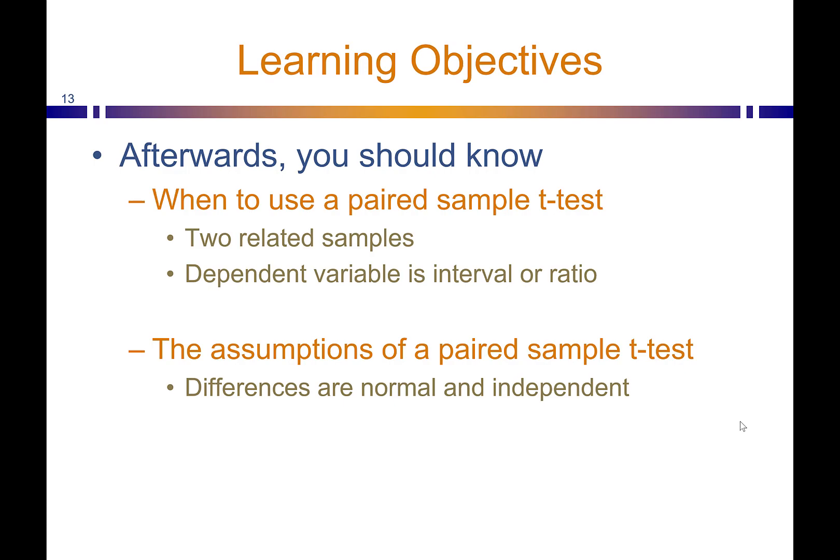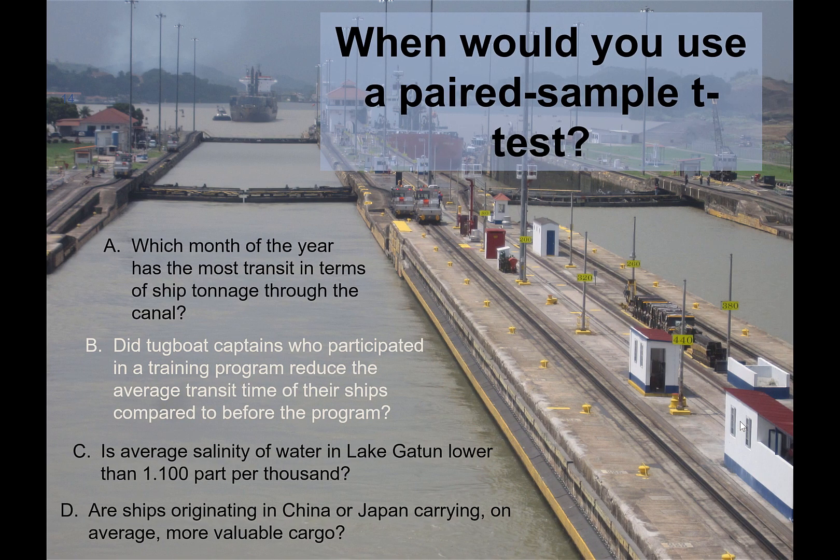Think about which one of these seems like it has a paired sample. Let's review: we want you to know when to use a paired sample t-test. Critical is that you have two related paired samples — the same thing being measured twice — and that your dependent variable is interval or ratio. Also important: the key assumptions are that the differences are normal and they're also independent. Going back to our example: you got it right if you picked B. Did the tugboat captains who participated in a training program reduce the average transit time? You measure them before they participate, you measure them afterwards, and then you run a paired sample t-test.